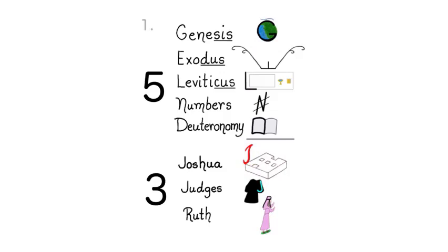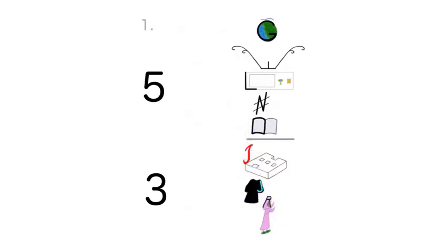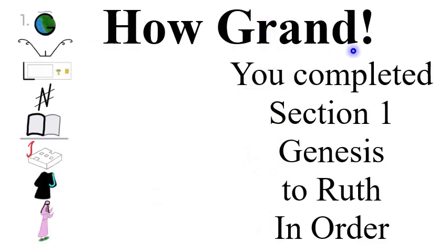Let's say this section together three times: Genesis, Exodus, Leviticus, Numbers, Deuteronomy, Joshua, Judges, Ruth. Genesis, Exodus, Leviticus, Numbers, Deuteronomy, Joshua, Judges, Ruth. Genesis, Exodus, Leviticus, Numbers, Deuteronomy, Joshua, Judges, Ruth. How grand — you completed Section 1, Genesis to Ruth, in order!